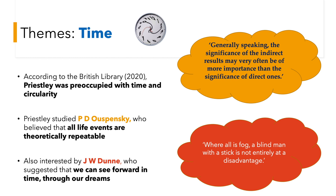In my research, I found that Priestley was also very fascinated by different philosophers and famous persons of the Victorian time. One of them was P.D. Uspensky, who was a Russian mystic and esoteric character. He believed that all life events are theoretically repeatable. He said, 'Generally speaking, the significance of the indirect results may very often be of more importance than the significance of direct ones.' This very much applies to An Inspector Calls — it's almost like a Sherlockian idea that little things may affect other things through causality.